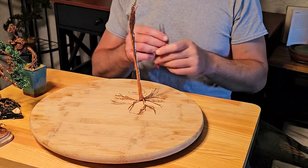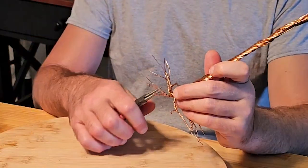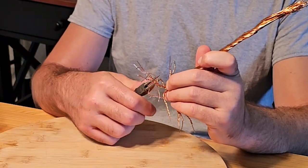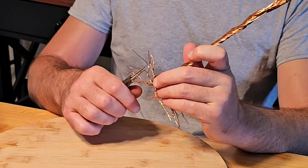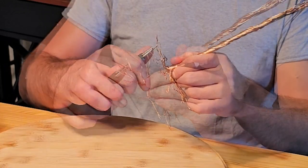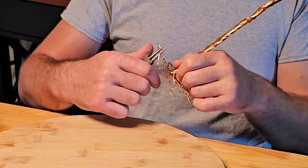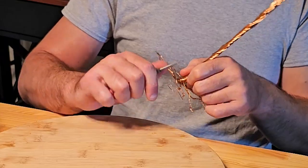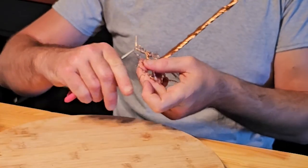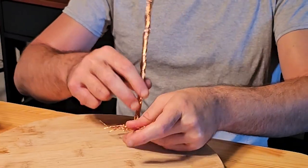Now we use our wire pliers to bend and create movement in the roots. Curved lines always look more visually appealing than straight lines. So it's always good to give them some movement. It'll look a lot better when we're finished.